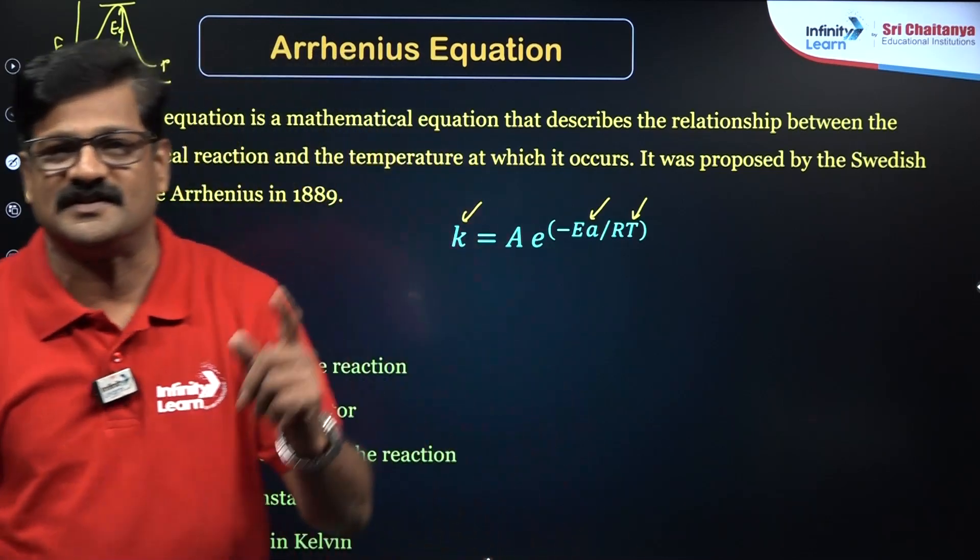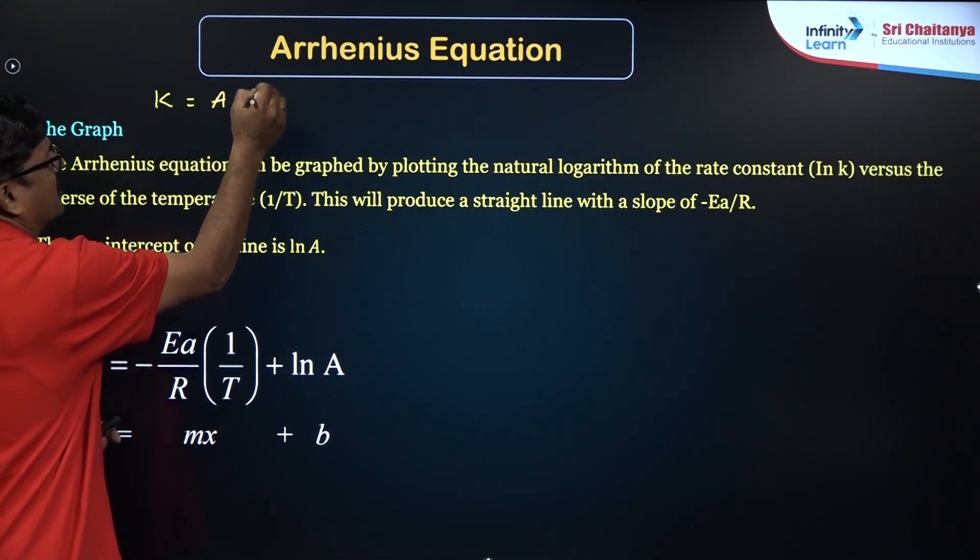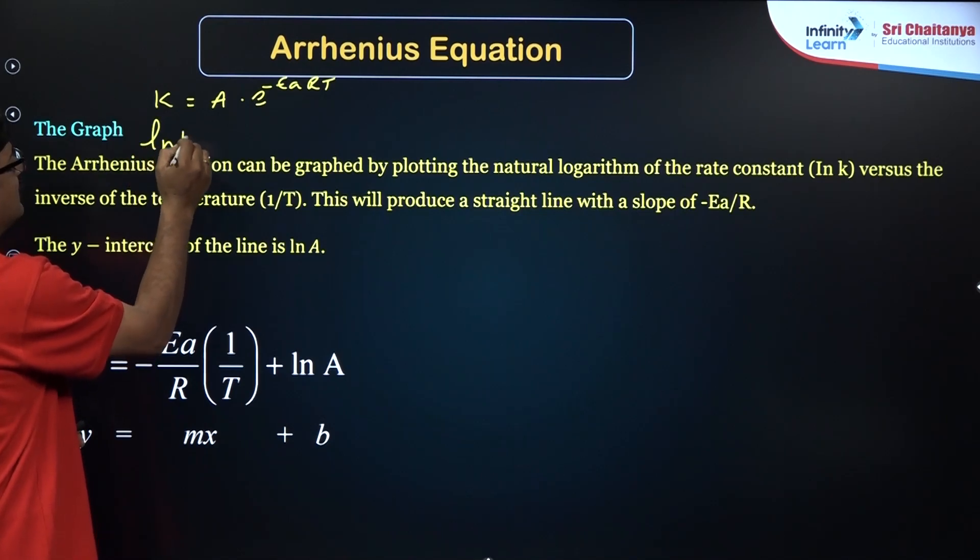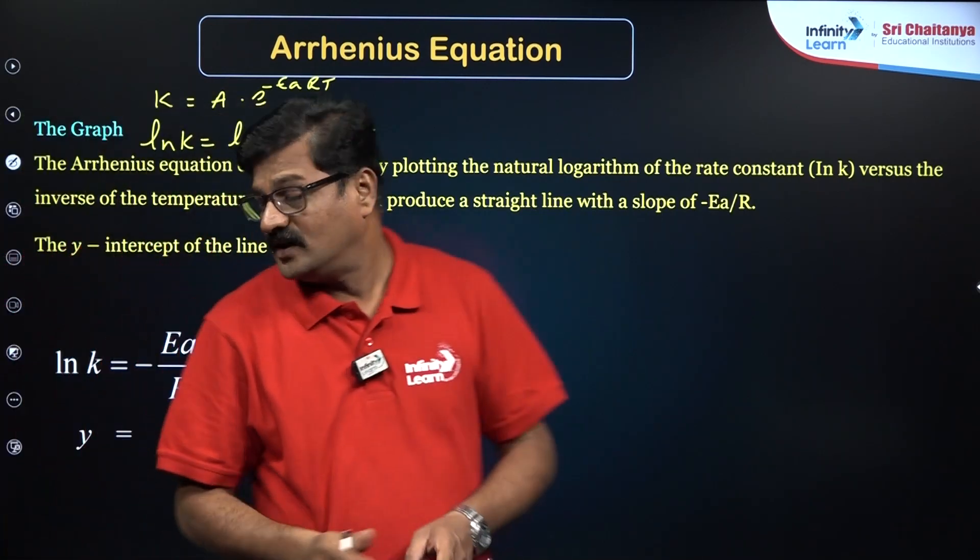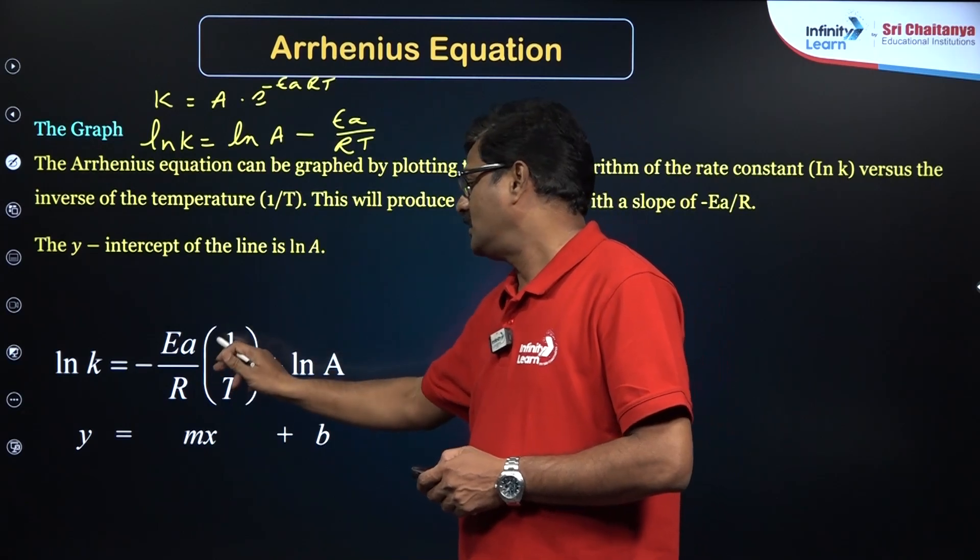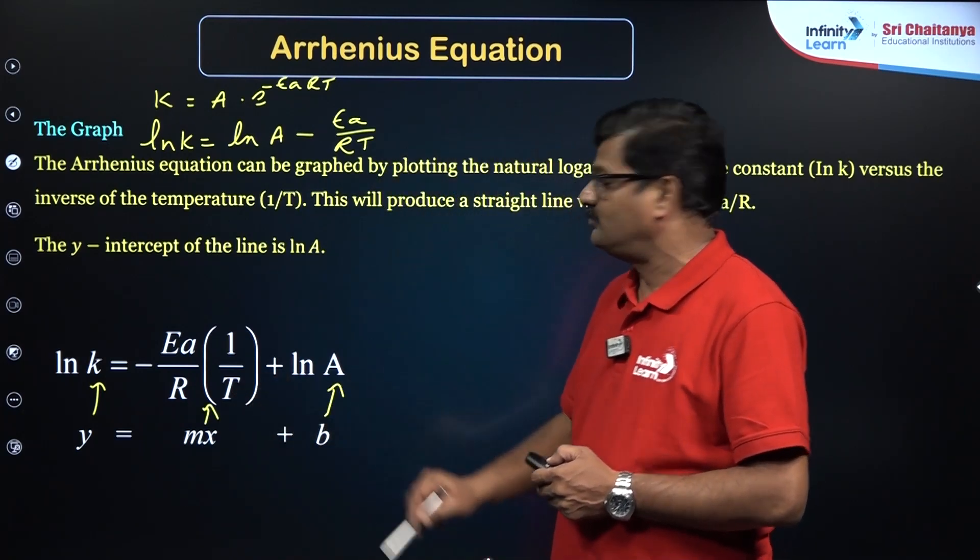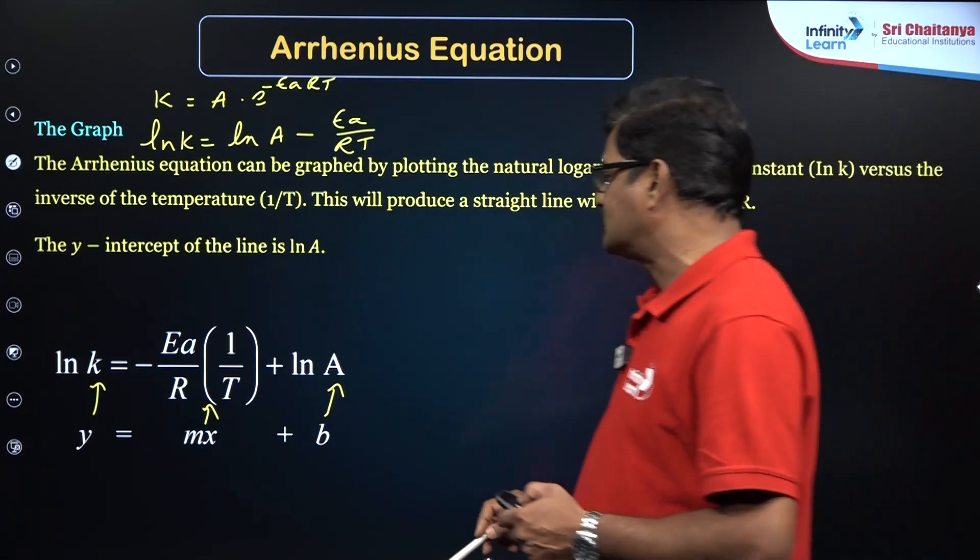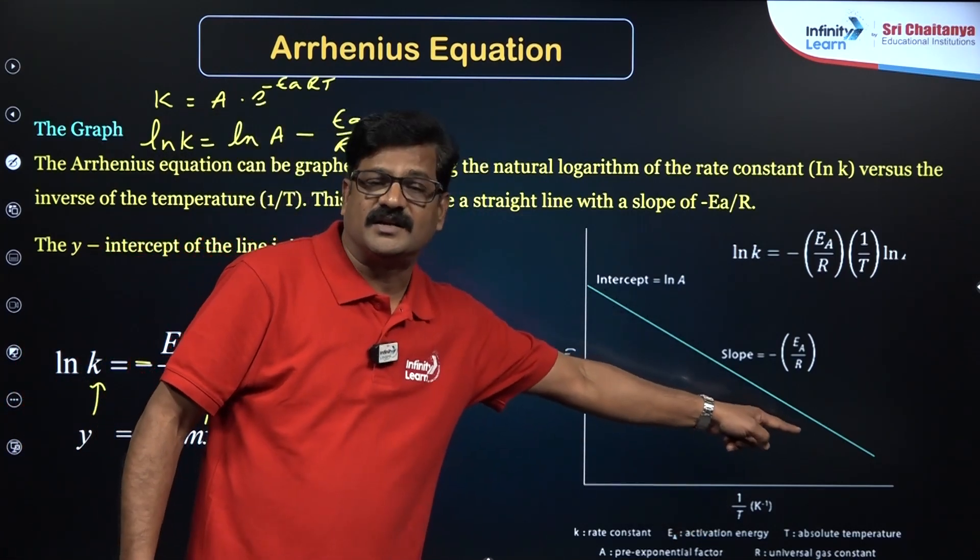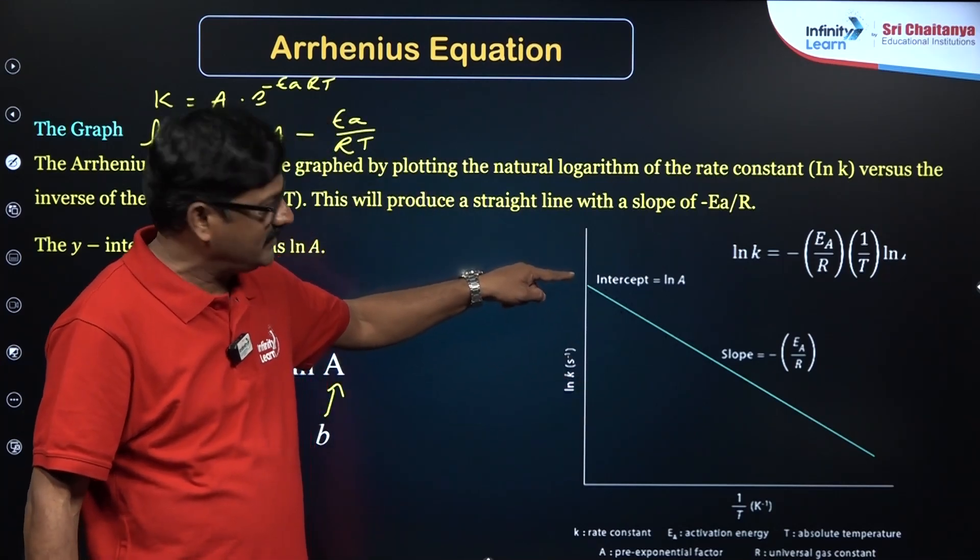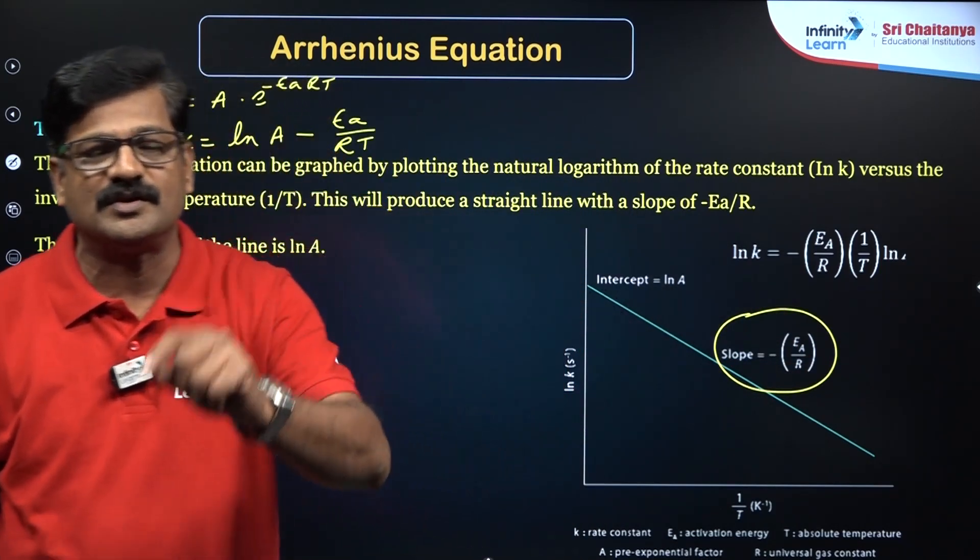You can see the graph. k = A e^(-Ea/RT), so you can write ln k = ln A - Ea/RT. That can be written as ln k = -Ea/R × (1/T) + ln A. So this equation appears to be as if y = mx + b. So it is going to be a straight line. It is given as a negative, so it is going to be a negative slope between ln k versus 1/T. You are going to get a straight line with a negative slope and intercept of ln A, and slope is going to be -Ea/R.